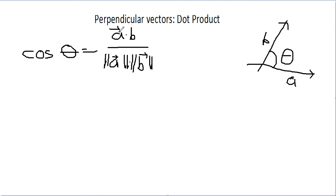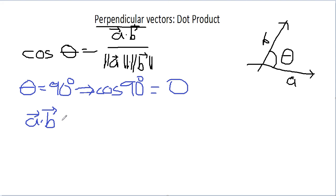Now what does it mean by perpendicular? It means that theta equals 90 degrees. Therefore, what does cosine 90 degrees give me? It gives me 0, which means that my dot product must be 0.